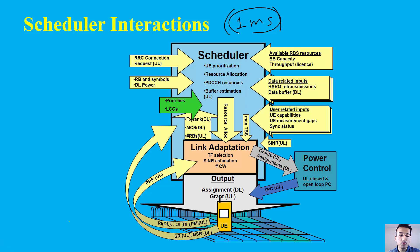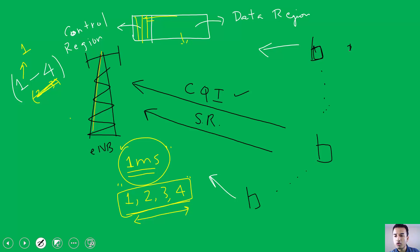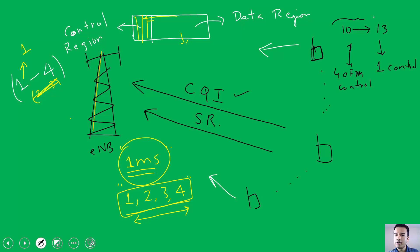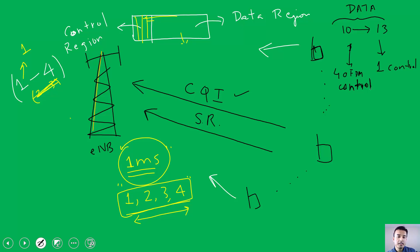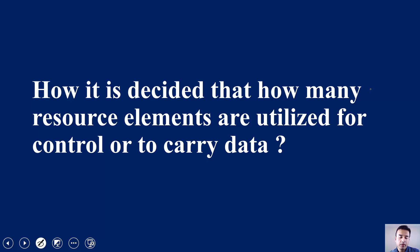To answer simply: it depends on the load and the number of inputs coming in. The control region will never exceed four OFDM symbols. If you're using four OFDM symbols for control, you have a maximum of ten for data; if you're using just one for control, you have thirteen for data. It's like a knob — the eNodeB scheduler dynamically controls the allocation based on load in each subframe every millisecond. Those are the metrics used to determine how many resources are allocated for control versus data on the air interface.